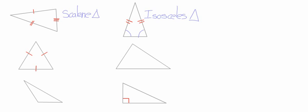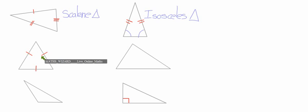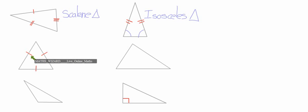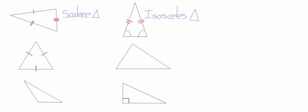The next triangle we have over here is a triangle where all three sides are equal in length. This side is equal to that one, which is equal to that one. We call this triangle an equilateral triangle.